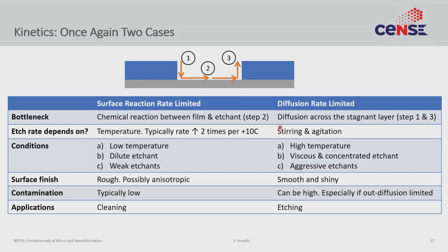However, sometimes the surface reaction rate is very fast, and in that case you are always waiting on fresh etchant to get to the surface — you are in the diffusion rate limited regime. As we discussed during CVD, surface reactions are often very strongly dependent on temperature. If the etching rate is surface reaction rate limited, then temperature plays an outsized role. Typically, the etching rate can go up two times for just 10 to 15 degrees of heating. The disadvantage is that you have to worry about selectivity, resist degradation, and non-uniformity — it is one thing to heat the solution by 10 degrees, quite another to ensure it is uniformly heated everywhere.